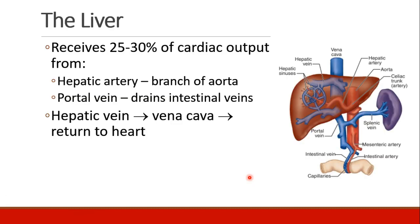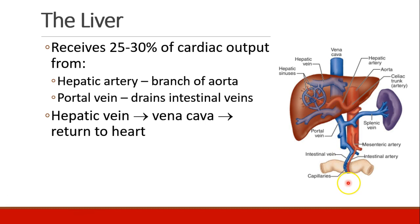Next, the liver. The liver gets about 25 to 30% of cardiac output. Part of it comes from the hepatic artery, which is a branch of the aorta, and part of it comes from the portal vein, which drains the intestinal veins. All of the blood flow then goes to the hepatic vein, which drains into the vena cava and returns to the heart.